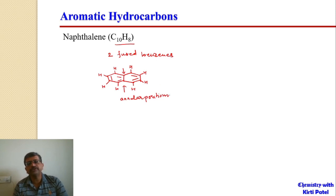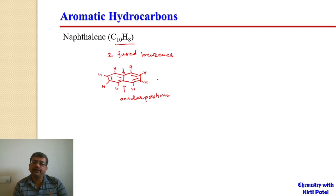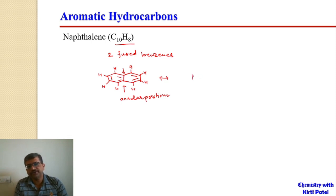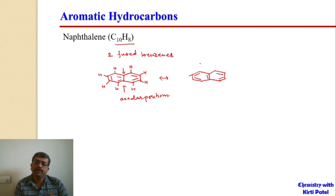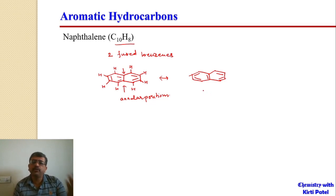Naphthalene can have resonance structures just as benzene does. While keeping one ring intact, the other ring can have its double bonds alternately placed. We do not show hydrogens explicitly because it is assumed that one hydrogen is present on each carbon atom except at the annular positions.